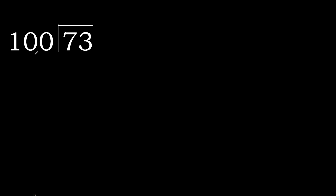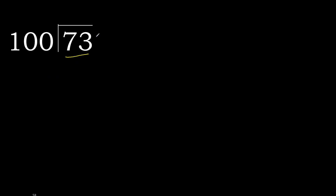73 divided by 100. 7 is less, therefore next. 73 is less, therefore next. There is no number, therefore complete — always complete with 0. Here: 0 point.